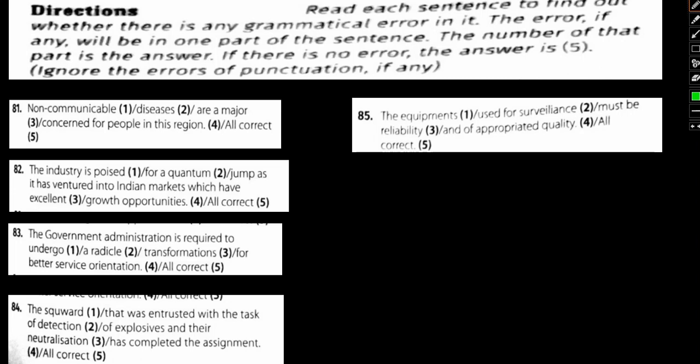Let's focus on 81. Non-communicable, number one, there's no spelling error, it's all correct. Diseases, again no spelling error. Are a major concern for the people in the region. Concerned - this is the past tense, this cannot be concerned, it should have been concern. So option 4, 1, 2, 3, option 4 is our answer. There is an error with respect to concerned. Now let's move to 82.